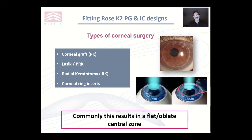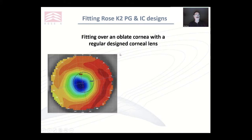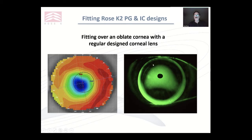All these conditions commonly result in a slightly flat oblate central zone. Very rarely do you end up with a prolate central area — it's usually oblate after surgery. If you try to fit an oblate cornea with a regular design corneal lens, you end up fitting on the highest part of the graft around the edge, often with pooling here, which can cause bubbles and poor vision. The deeper this tear layer, the poorer the vision. Not ideal.